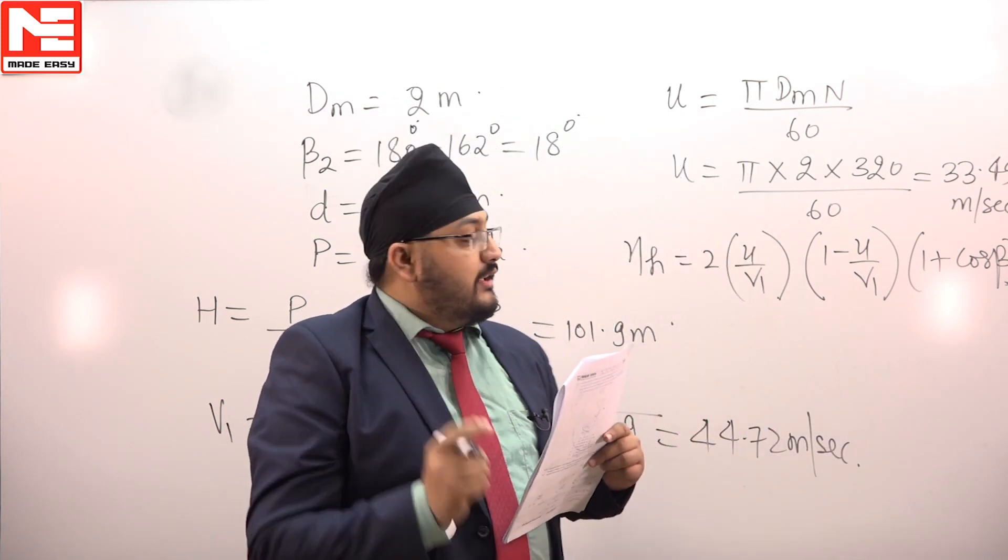So u we have and v1 we have. The value of hydraulic efficiency will be 2 by u by v1, 1 minus u by v1, plus 1 plus cos beta 2. Beta 2 here will not be 162, it will be 18 degrees.